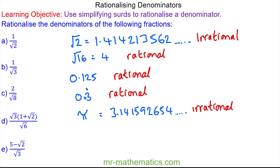For this lesson we are going to look at rationalising a denominator. That means when we have the denominator of a fraction — take the example of question a: 1 over root 2. This denominator is currently irrational, so we are going to make it rational.